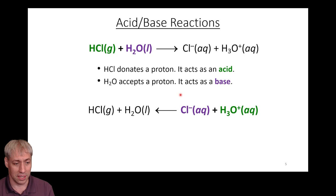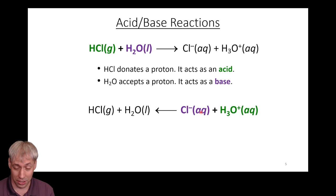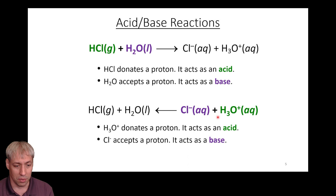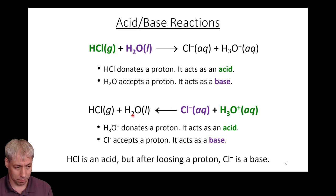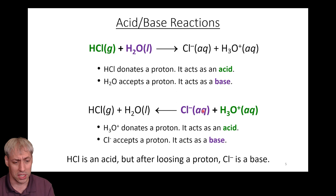Interestingly, these reactions can also go the opposite way. Cl- is a species that could accept a proton — it's not really good at it, but it could. H3O+ can donate a proton because it just accepted one. So the reverse process can occur: H3O+ is an acid that donates a proton to generate H2O, and Cl- can accept a proton to turn back into HCl. Cl- can behave as a base — a very, very weak base, but still a base.